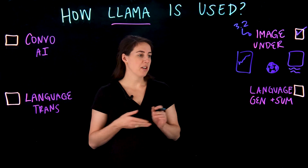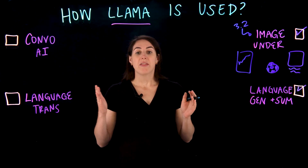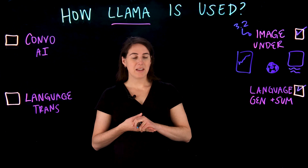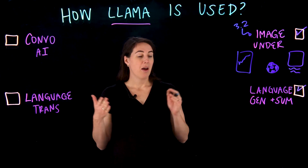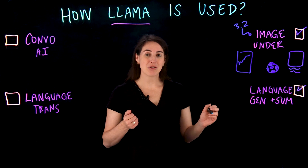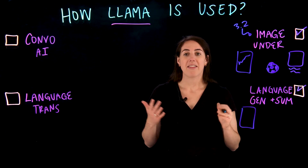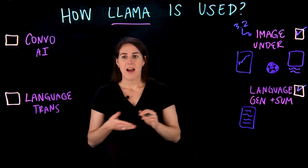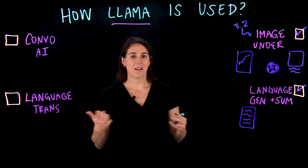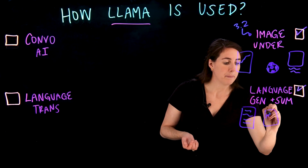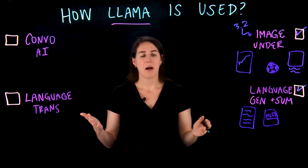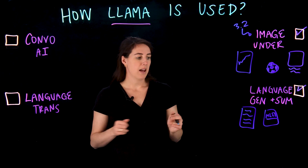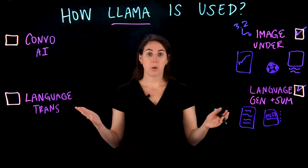Next we have language generation and summarization, one of the most popular Llama use cases even from the early days. With language generation, we can generate things like scripts, large bodies of text, or something as short as a bio or a profile — for example, writing a quick LinkedIn bio using Llama. For summarization, we can do things like summarize meeting notes, taking something that might have been an hour or multiple hours and summarizing that into a simple four-bullet list.